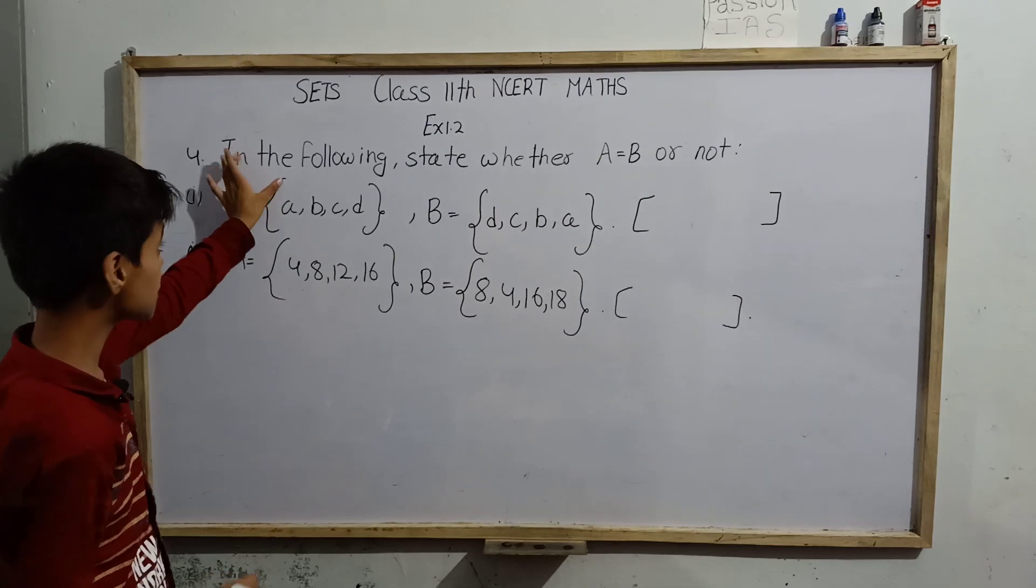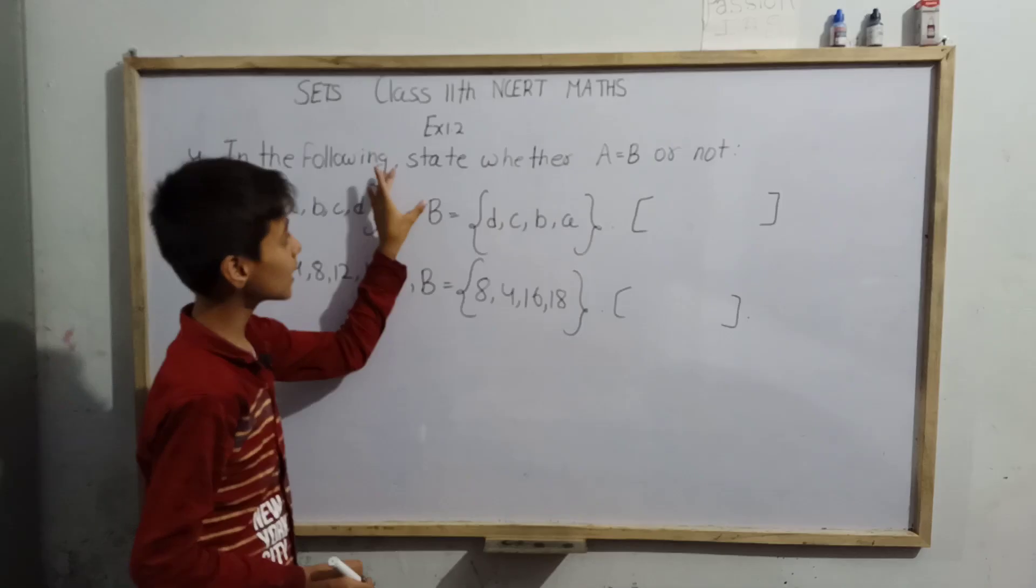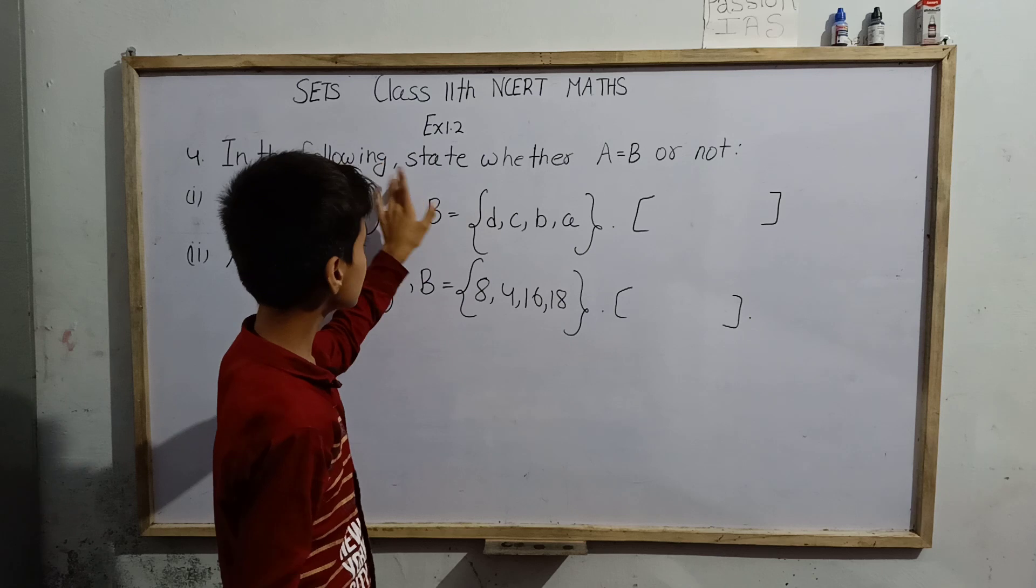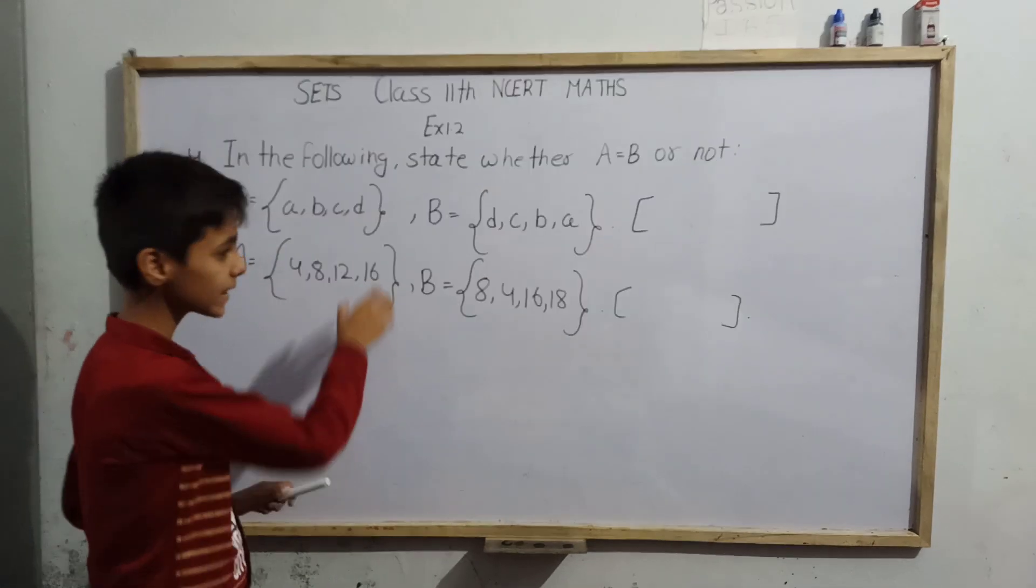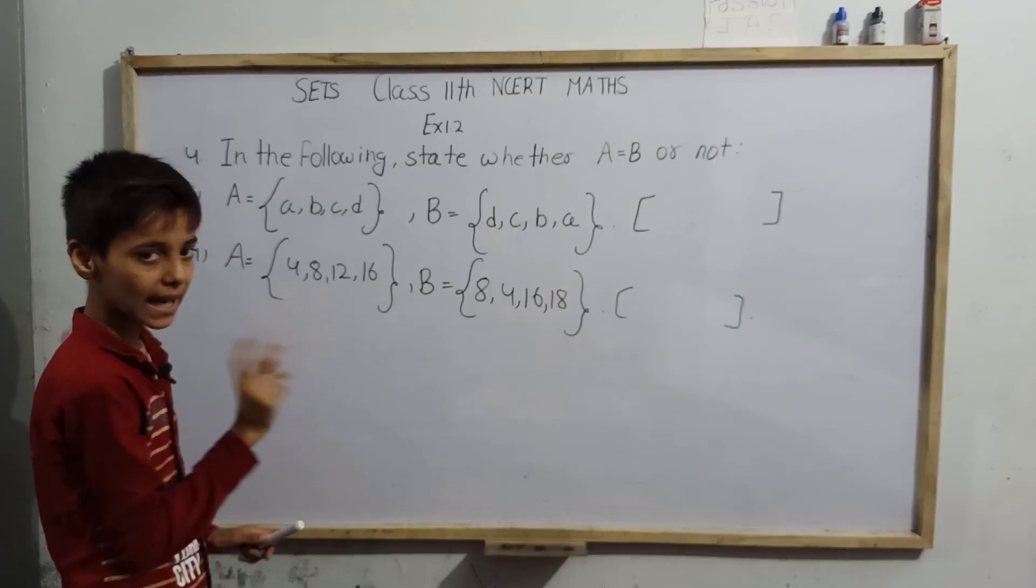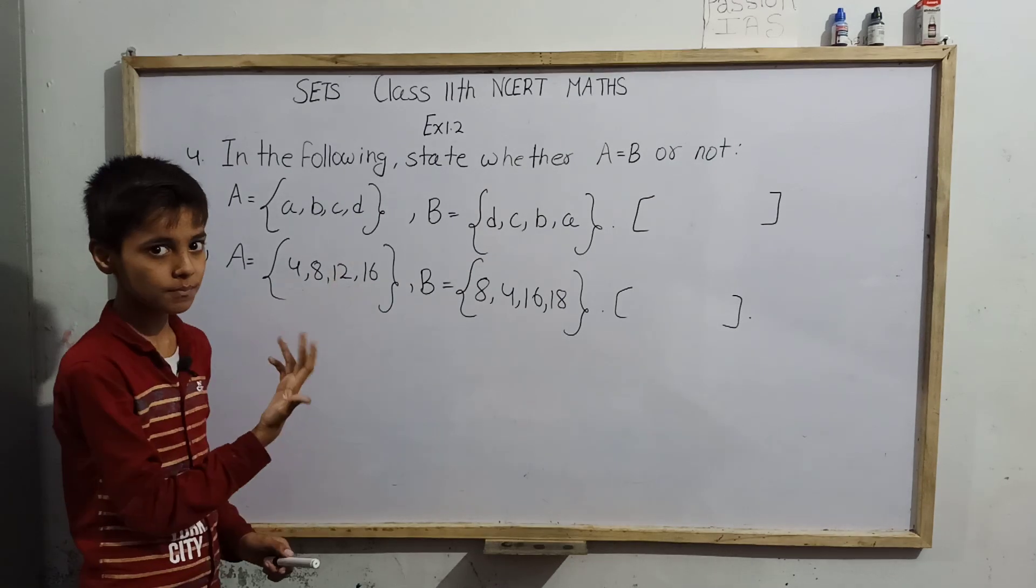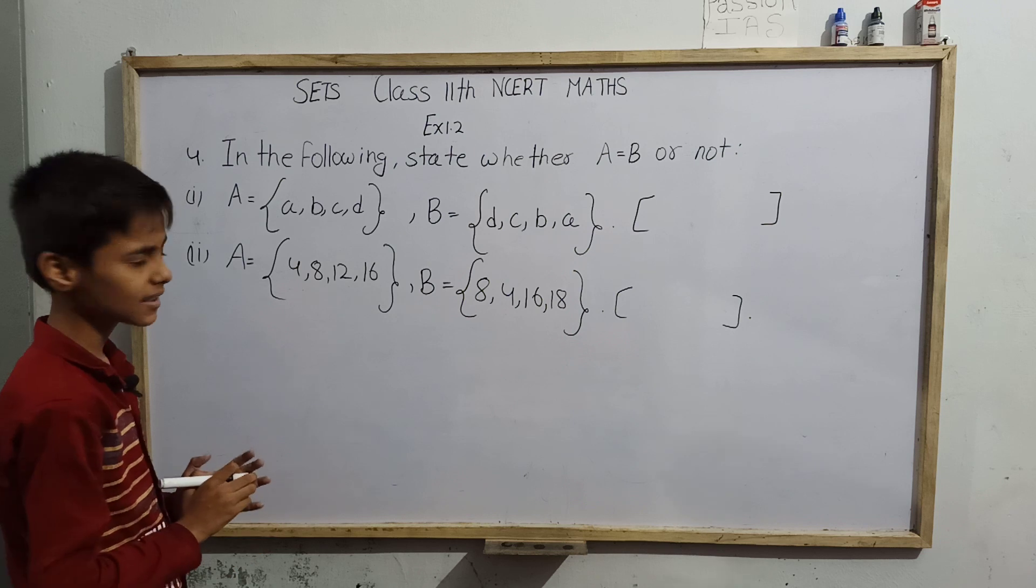So here we have question number 4: in the following, state whether A equals B or not. Two sets have been given to us in each question, A and B. Now we have to state whether A equals B or not. So let us start now.